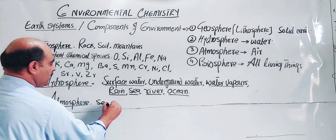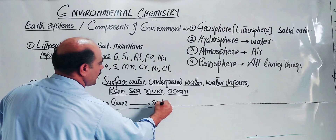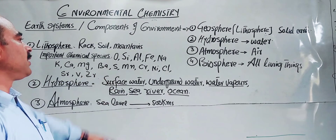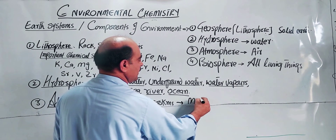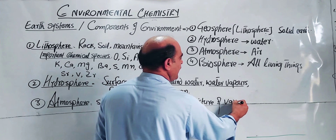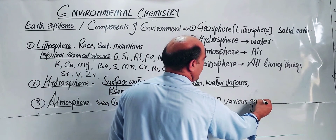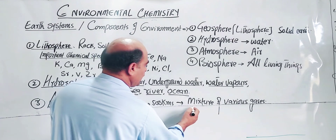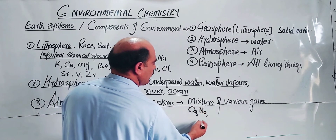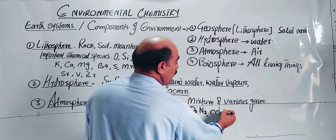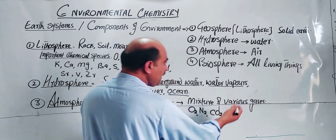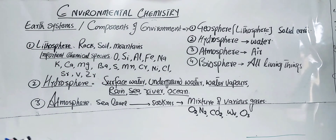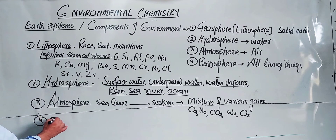The Atmosphere extends up to 500 kilometers above sea level. It is a mixture of various gases — important chemical species include: oxygen, which is needed for respiration; nitrogen, which supports plant growth; carbon dioxide, which is used in photosynthesis; water vapors, which cause rain. These are important chemical species of the atmosphere.